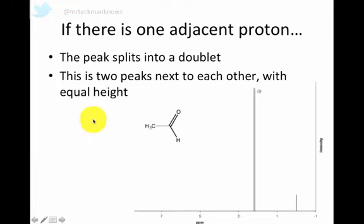If there's one adjacent proton, like these protons here, they have one adjacent proton, which is this fellow over here. Their peak splits into two. So this is the peak for these three protons. You'll see there's a little number three up here, that means there are three protons in that environment. These three protons have one proton adjacent to them. Therefore, the peak is split into two, into a doublet. That's two peaks with the same height.